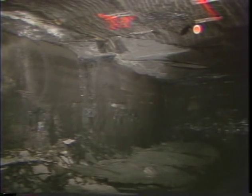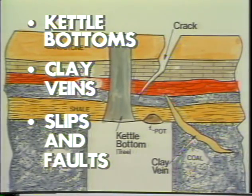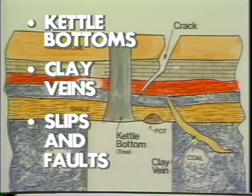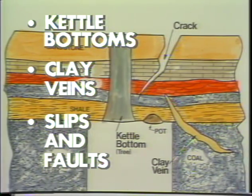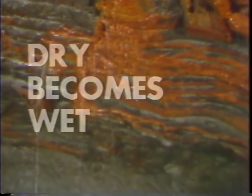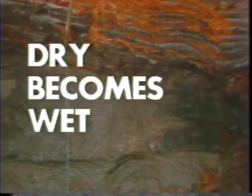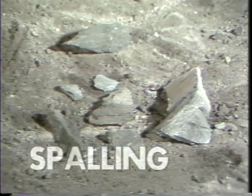Some of the things you should look for when evaluating a working place are stress cracks in the roof, in the ribs, and in the floor. Look for any unusual rock formations, such as kettle bottoms — those smooth, rounded pieces of rock, sometimes cylindrical in shape, which can drop out of the mine roof without warning. Also, look carefully for clay veins or any other abnormal roof conditions, such as slips or faults. Other indications that a problem may be developing are changes in conditions, such as a formerly dry place that has now become wet. There may be signs of spalling — small chips of rock on an otherwise clean floor.